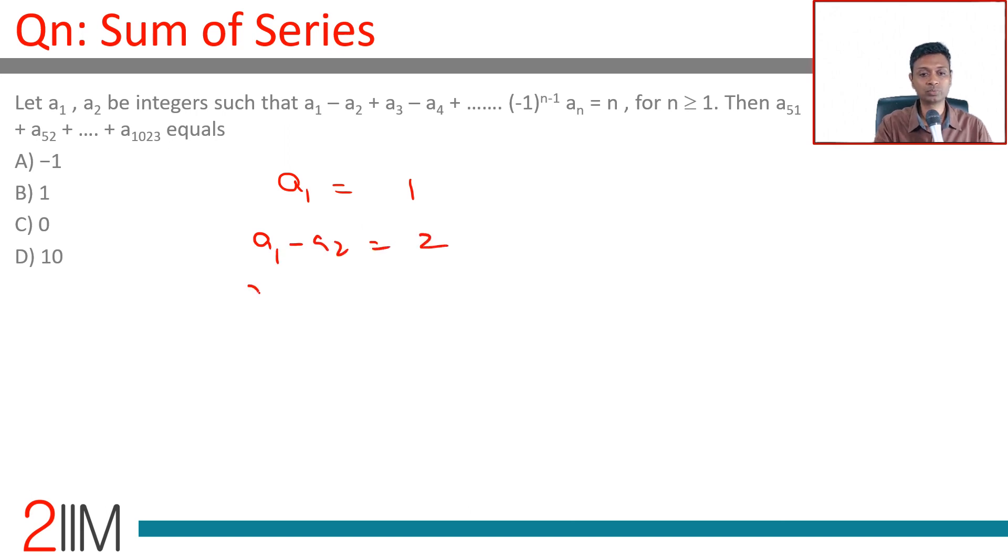a2 is 2. a1 - a2 + a3 = 3. a1 = 1, 1 - a2 = 2. So a2 = -1. 1 - a2 = 2, a2 = 1 - 2 which is -1. Till here adds up to 2.